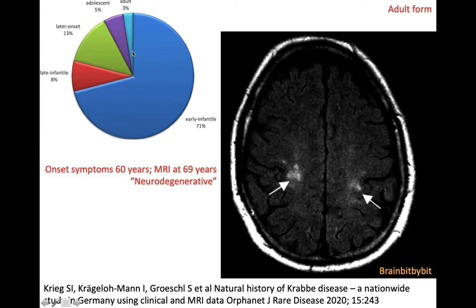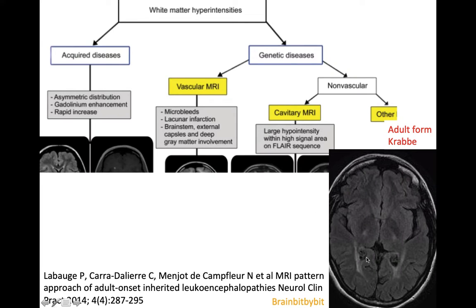A minority of Krabbe's cases present in adulthood — this patient was 60 when he presented, and this is the MRI nine years later. You might even think of it as a neurodegenerative disease in cases like that. Besides corticospinal tract involvement, you can also see parietal-occipital involvement in adult Krabbe's disease. There are very nice schemes that can help differentiate between acquired and genetic causes of white matter abnormalities in adults.